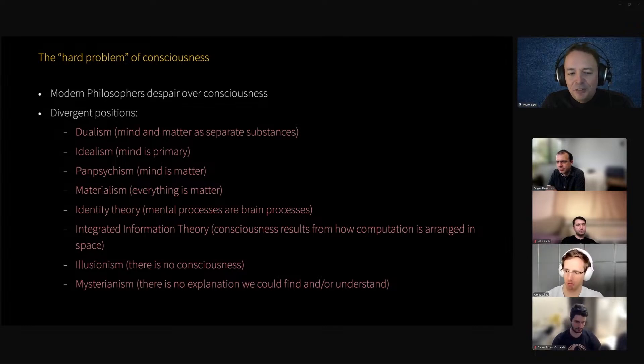Integrated information theory says consciousness basically results from how computation is arranged in space. And I fear that this theory is so poorly formulated, it's sort of a control group because it violates either the Church-Turing thesis or becomes epiphenomenalist. So it's a way to test whether philosophers understand theories of representation.